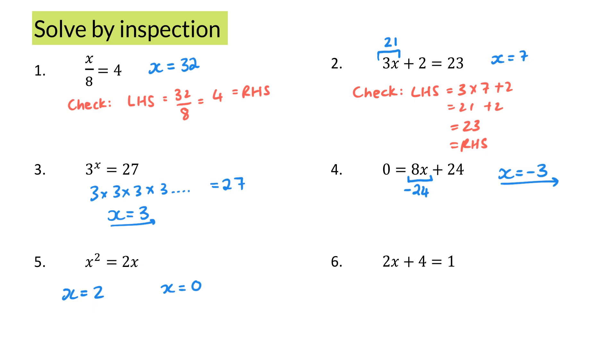If I look at my first solution of x is equal to 2, my left-hand side will be 2 squared, which is 4. And my right-hand side will be 2 times 2, which is 4. From my checking, x is equal to 2 is a valid solution. Let's look at the other solution I gave, x is equal to 0. If I look at the left-hand side, 0 squared, which means 0 times 0, will be 0. And my right-hand side, 2 times 0 is 0.